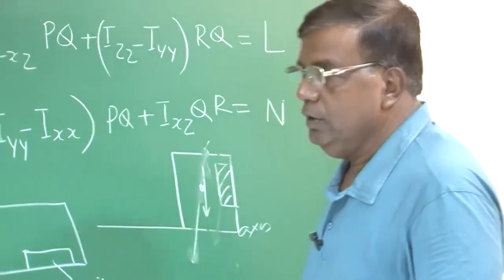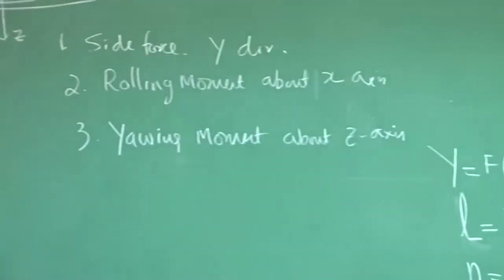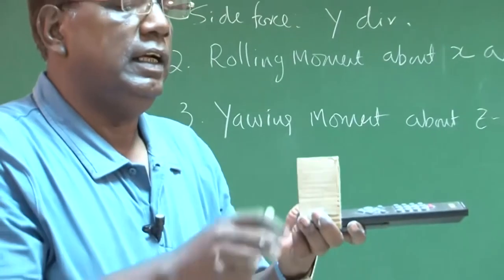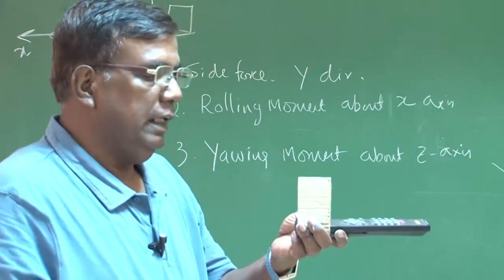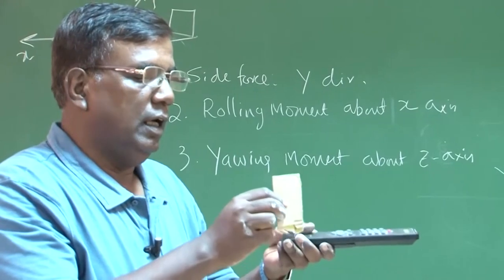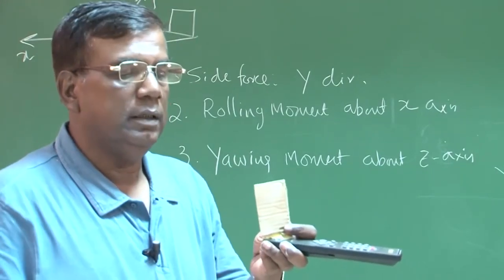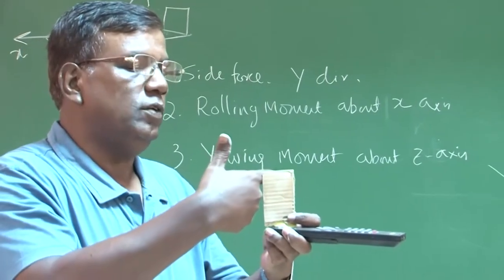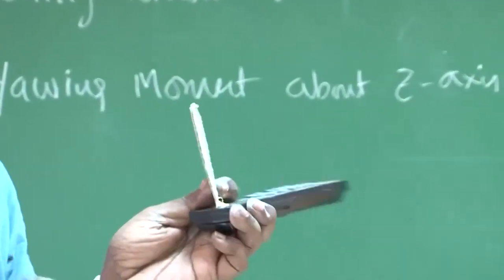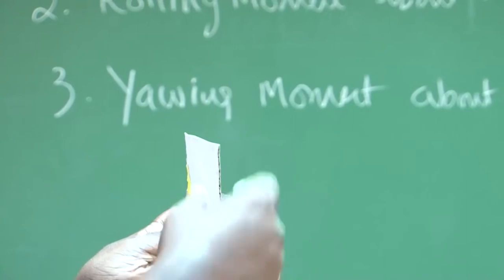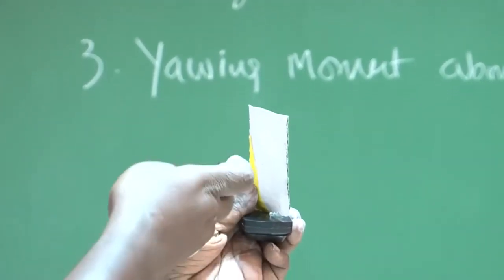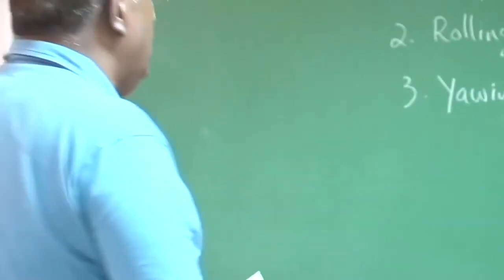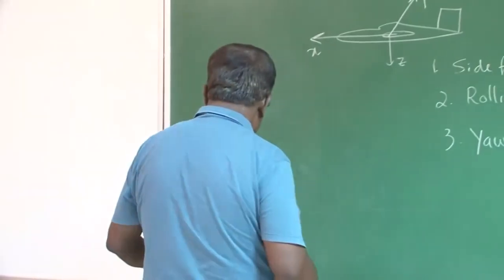It is also important to understand that if I have a vertical tail with a rudder, deflecting the rudder can also generate a rolling moment. If the rudder is deflected and the force comes out in this direction, that force times the distance from the x axis gives a rolling moment. So the rudder generates a rolling moment in addition to a yawing moment.